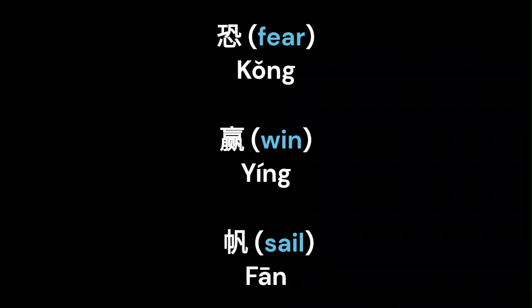In radical form, 凡 can be found in words such as fear (恐), win (赢), and sail (帆). This makes it an important character to learn.